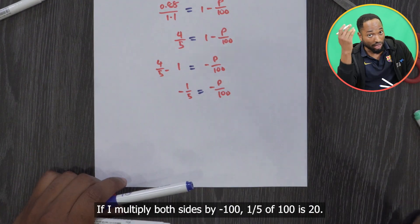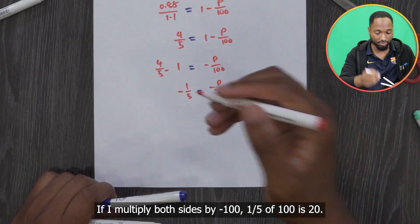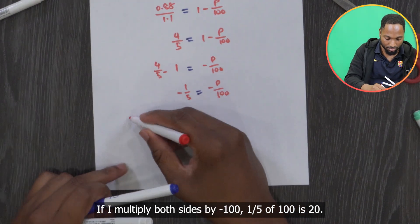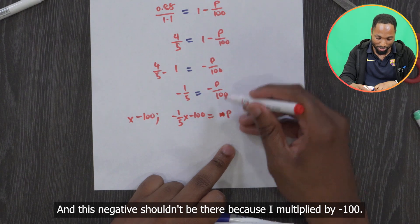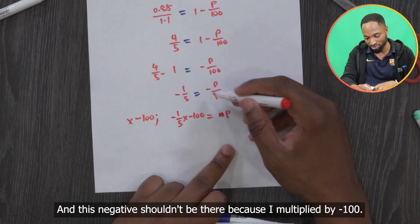If I multiply both sides by negative 100, one-fifth of 100 is 20, and this negative shouldn't be there because I multiply by negative 100, so that's gone.